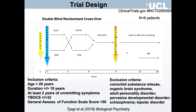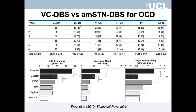This was a double-blind randomized crossover design. In the first two phases, three patients received ventral capsule/ventral striatum stimulation and then crossed over to the STN target, while the other three started with the STN target for 12 weeks and then crossed over to the ventral capsule/ventral striatum for another 12 weeks. This was followed by 12 weeks of stimulation of both targets, then optimization of parameters, then six months of optimum DBS, and finally 12 weeks during which patients also received cognitive behavior therapy as inpatients.